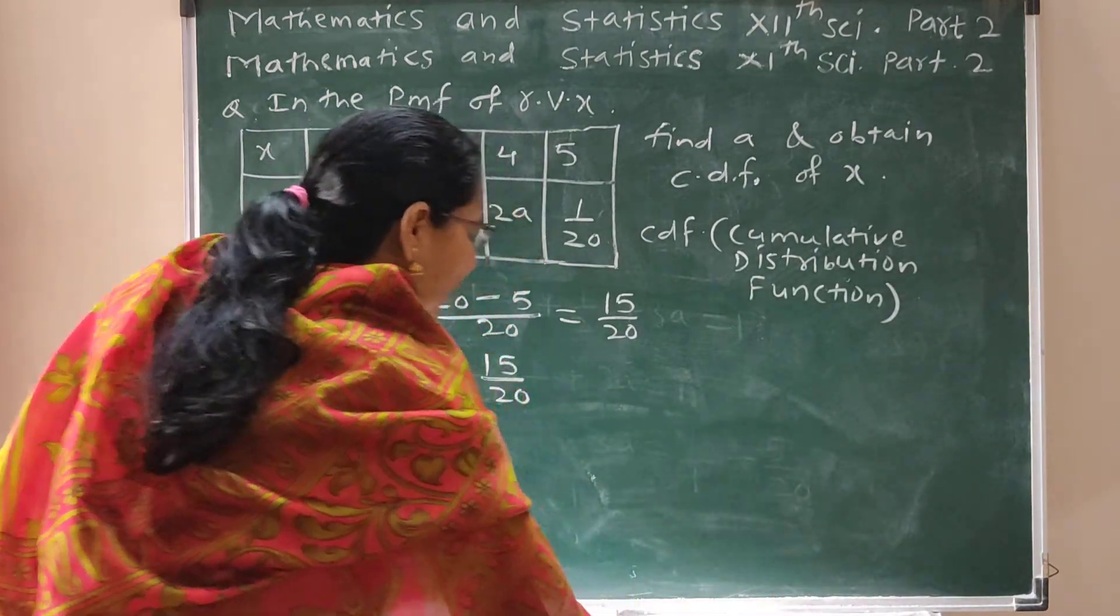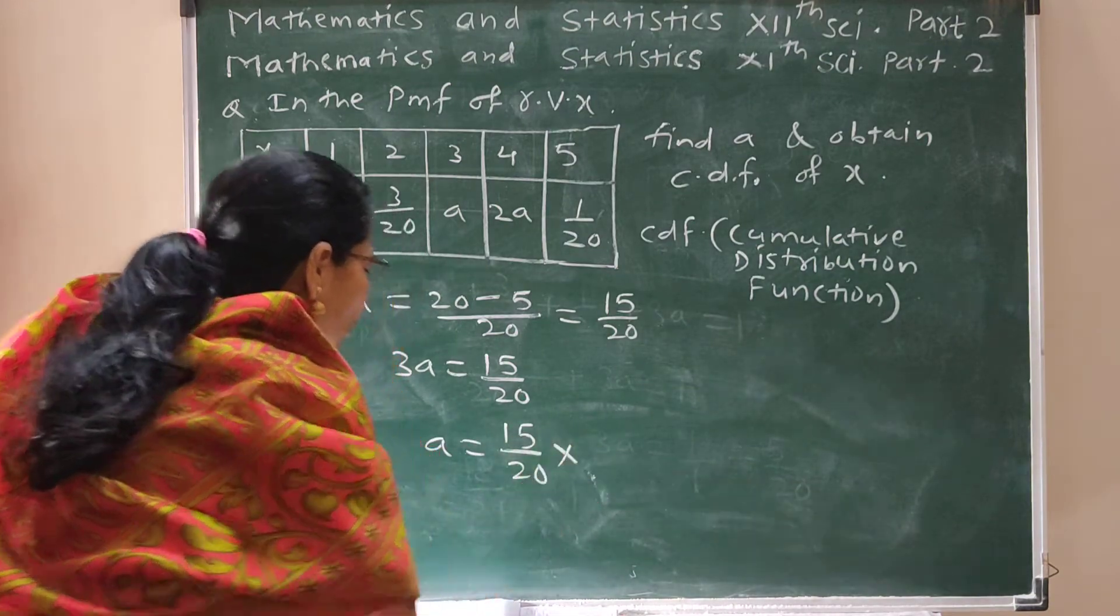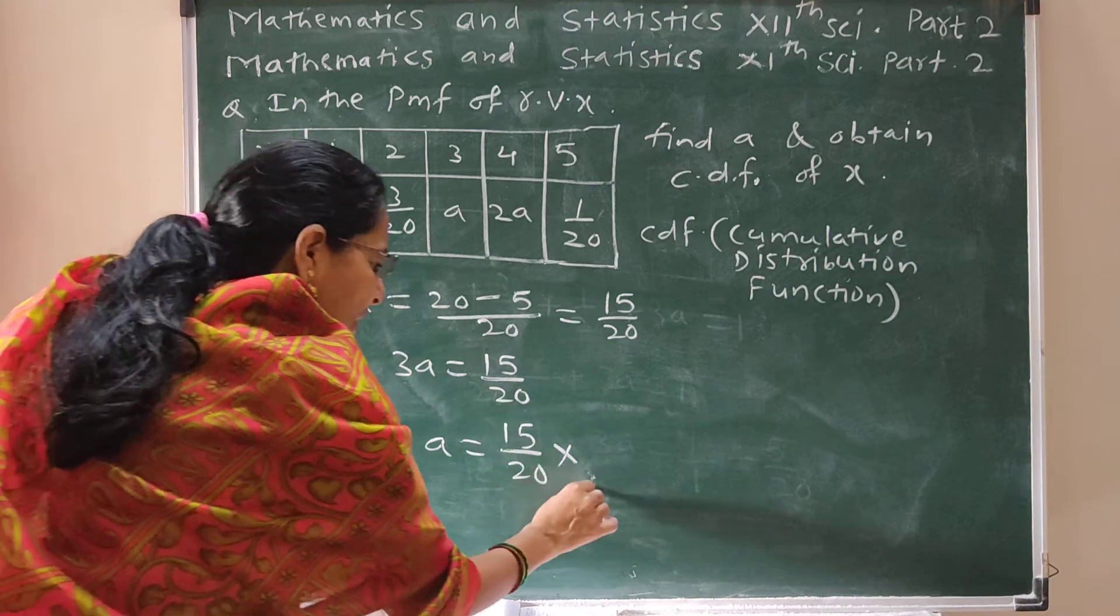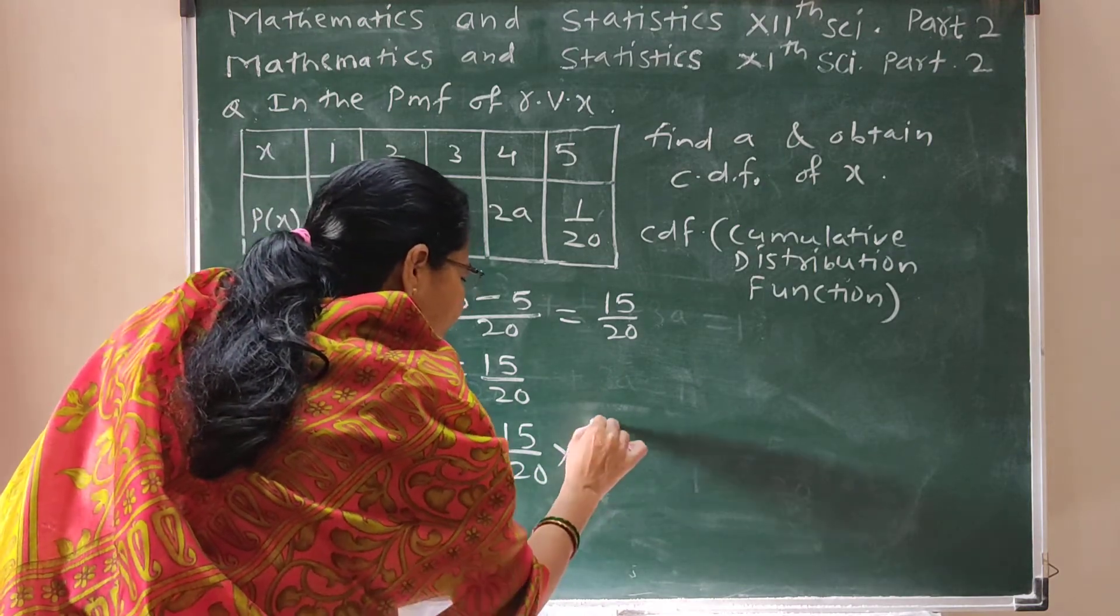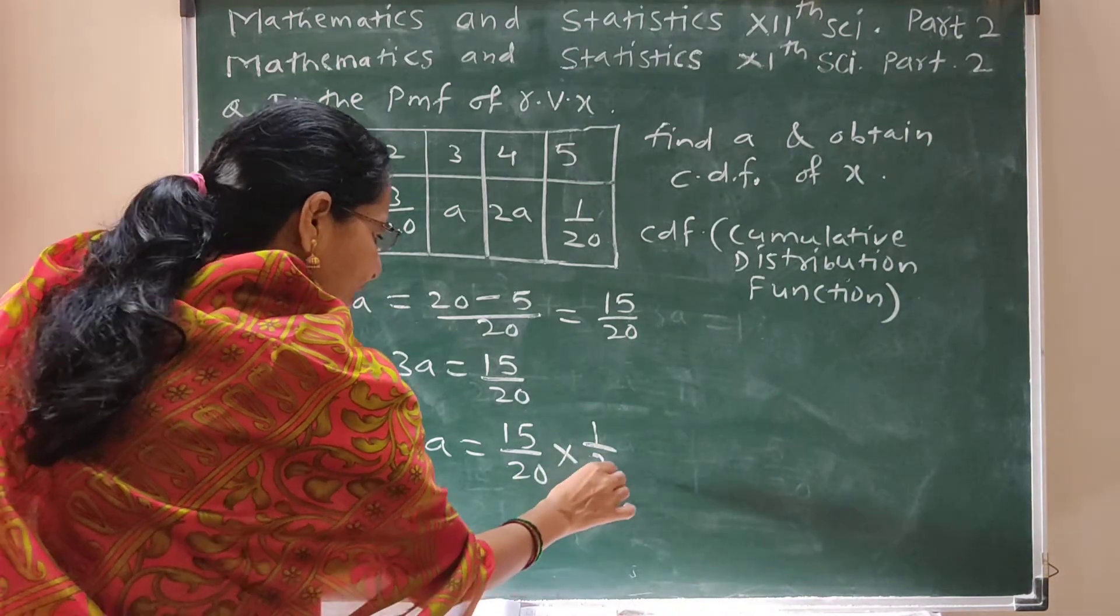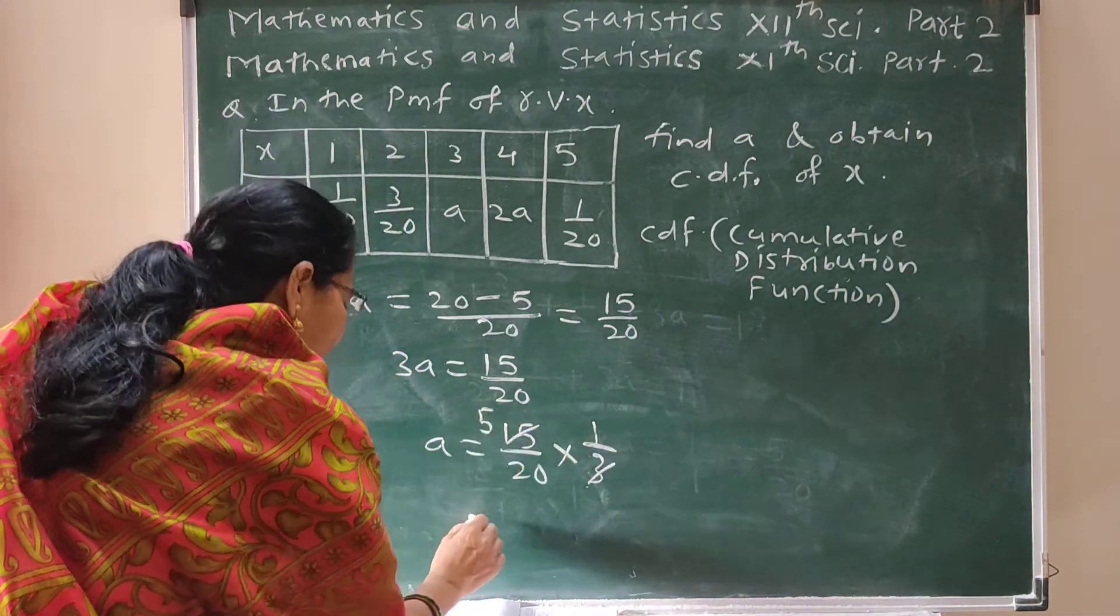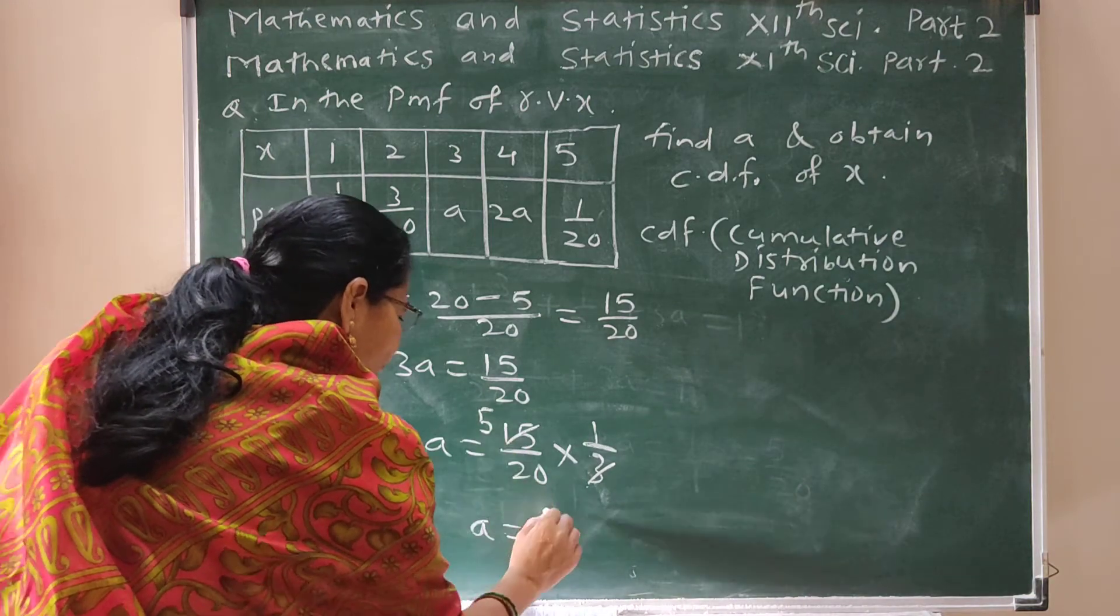We have to find A. 15 upon 20, 3 to this side becomes 1 upon 3. Simplification: 3 and 15, we get A is equal to 5 upon 20.